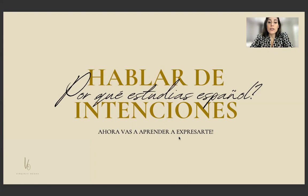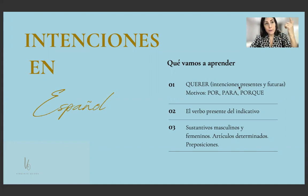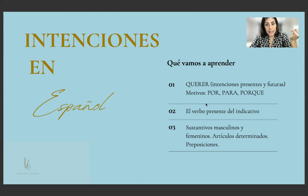¿Qué vamos a aprender en esta unidad? El verbo querer. Today — class one of three — we will study verbo querer para intenciones presentes y futuras. With this verb we can express what we want to do in the future. Motivos: por, para, y por qué. Even at advanced levels, students still make mistakes between por and para, but we will start studying them now. Mañana — el verbo presente del indicativo. Pasado mañana — sustantivos masculinos y femeninos, artículos determinados, y las preposiciones.